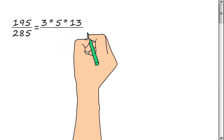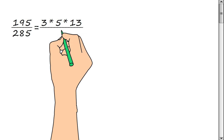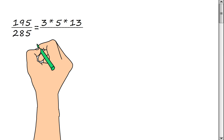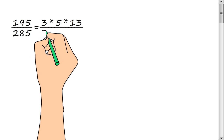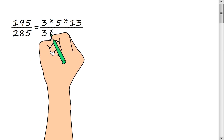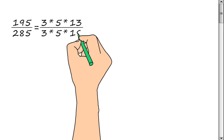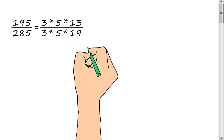Now we represent the denominator of the fraction as a product of prime factors: 3, multiply by 5, multiply by 19.